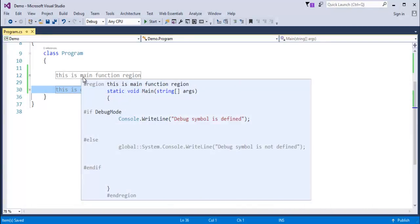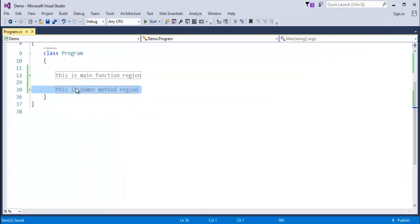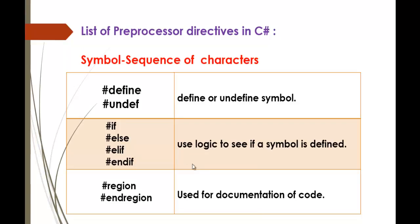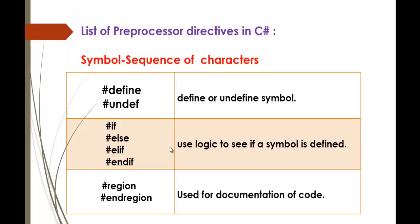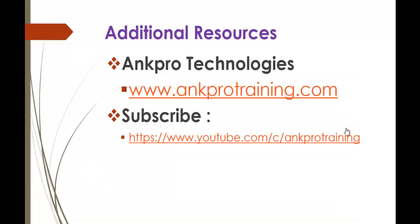Whenever you hover over a region, it shows you the code inside that function. Pre-Processor Directives give instruction to the compiler to pre-process the information before the compilation starts. When you compare to other languages like C and C++, pre-processor directives are used for constants there, but here in C-Sharp they are used for some other purpose. That is the beauty of C-Sharp. Finally, thank you for listening, have a great day. Please subscribe to the YouTube channel AngPro Training and don't forget to give feedback. Thank you.